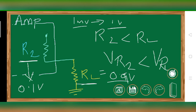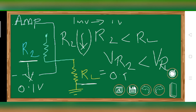So what we have learned is that our output impedance R2 should be as low as possible. The output impedance of the amplifier should be as small as possible.